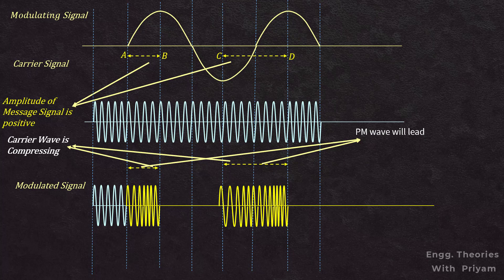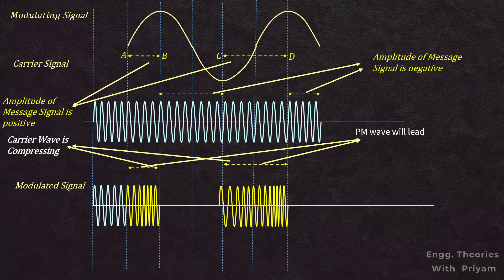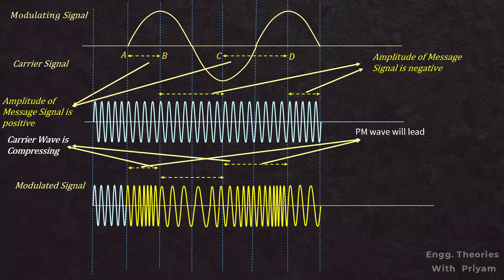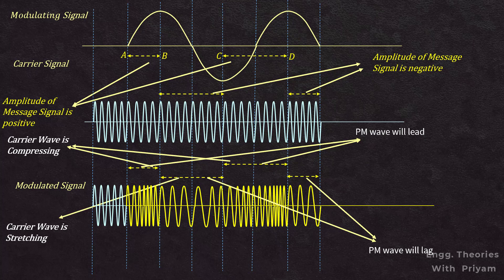Conversely, when the modulating signal becomes negative from B to C, the phase deviation will be negative. Due to this, the phase modulated wave will lag behind the carrier signal, or the carrier signal leads the phase modulated wave. This results in a stretching of the carrier signal, or a decrease in its frequency in the phase modulated wave.